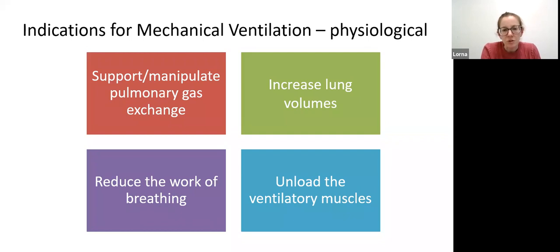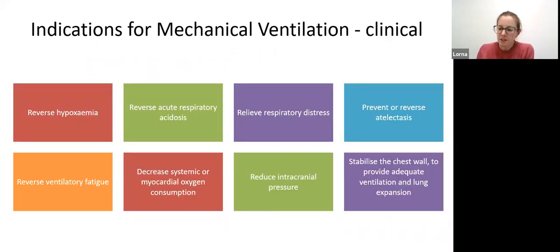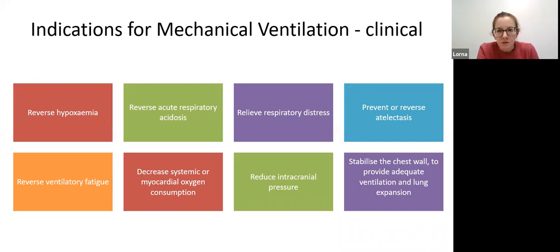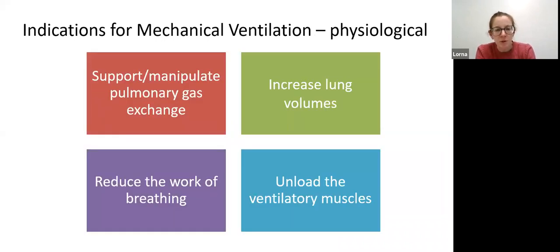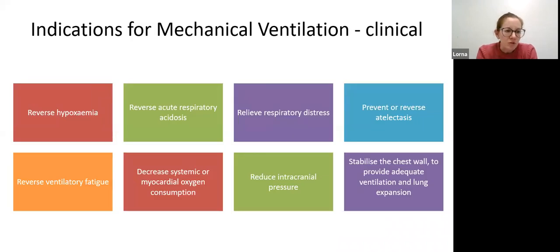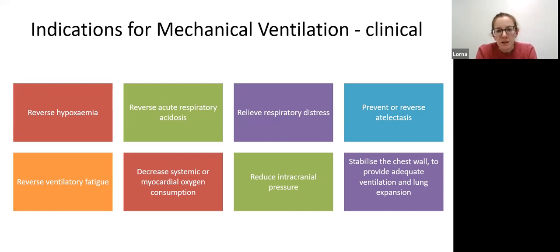This can give the patient time to correct the initial problem. Clinical indications are linked to signs and symptoms of the primary problem. If they're hypoxaemic, we can use mechanical ventilation to reverse hypoxaemia by supporting pulmonary gas exchange or increasing lung volumes. We can reverse acute respiratory acidosis and relieve respiratory distress - if someone's work of breathing is very high, mechanical ventilation can reduce that distress by taking some of that work from them.